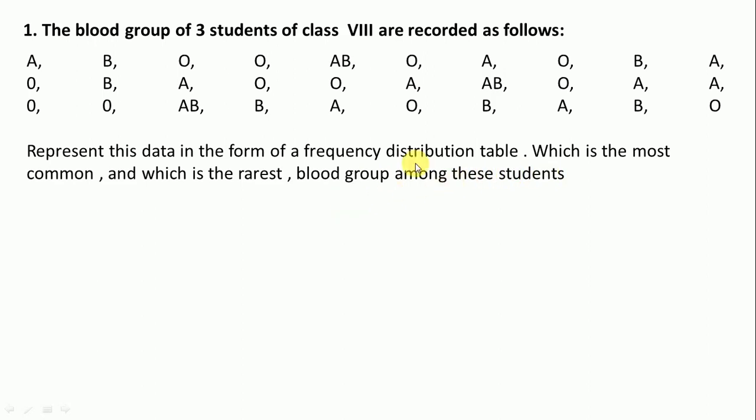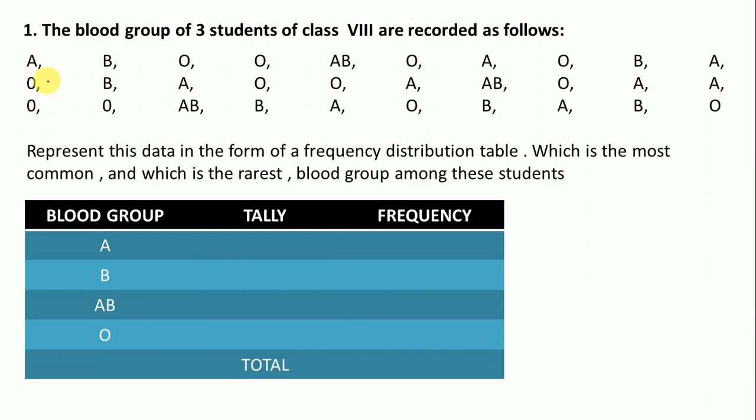For the frequency distribution table, we first prepare the table. First is A, put a one line for A in the row of A. Then B, write B, one here. Here is O, O, we mark two lines here for double O.